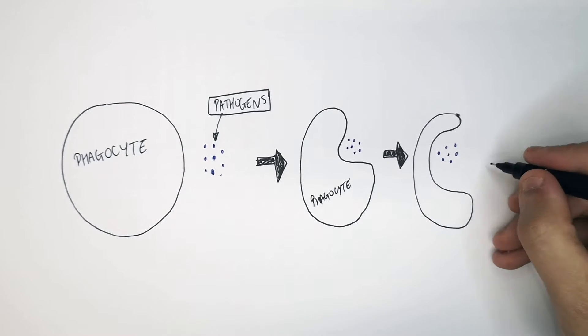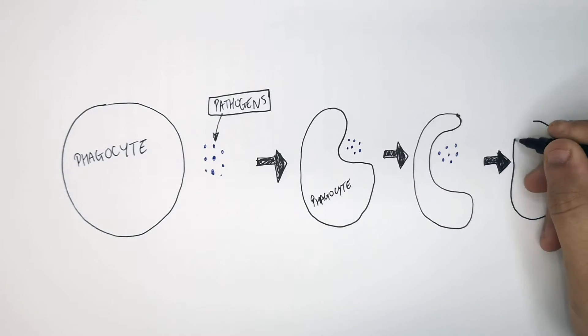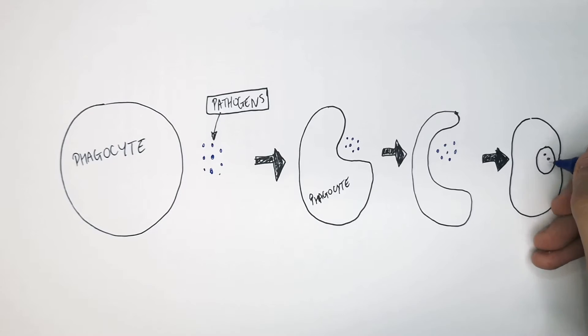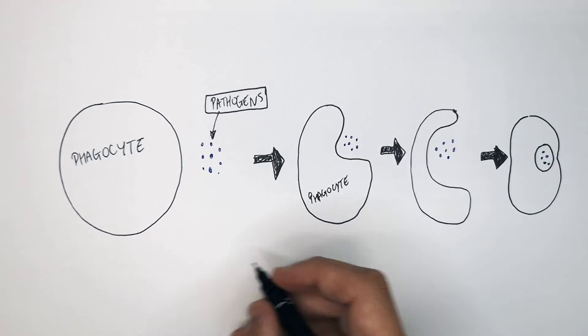So as you can see, the phagocyte here is engulfing the pathogens, not eating them. Do not write eat. Then the phagocyte will break down and kill the pathogens.